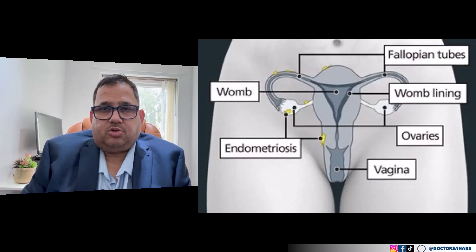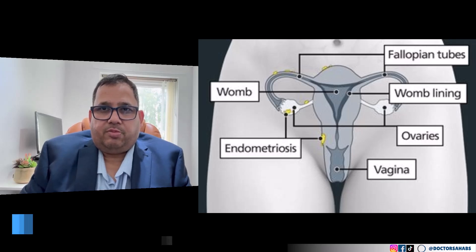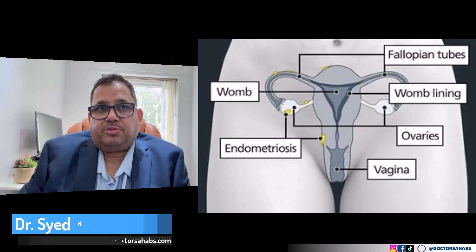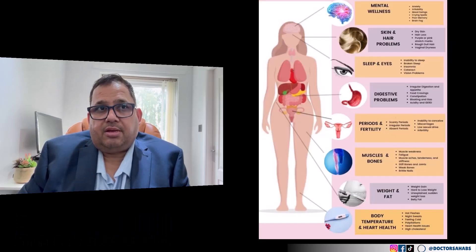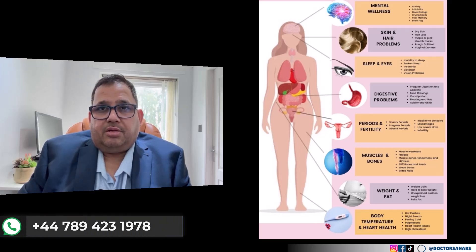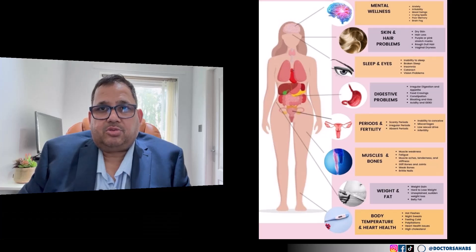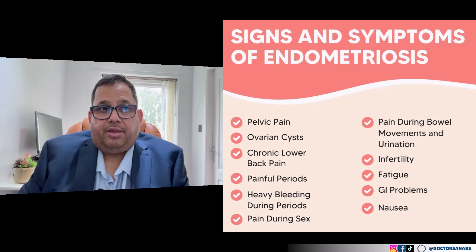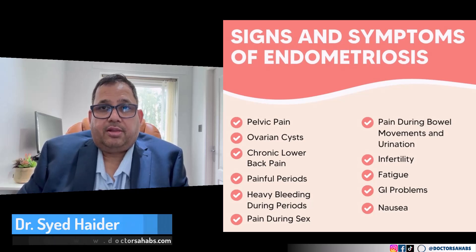If endometrial tissue is present on the pelvic side wall or peritoneum, patients usually complain of severe lower abdominal pain or severe pelvic side wall pain. Sometimes the pain is associated with bleeding during urination, or their periods are heavier than normal.